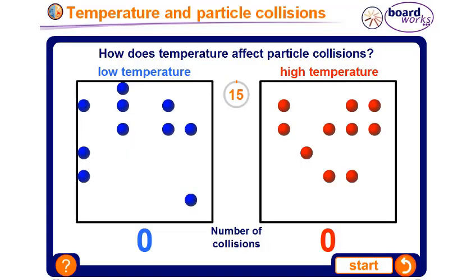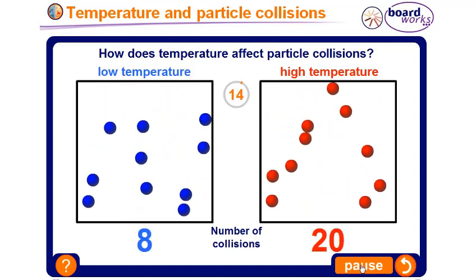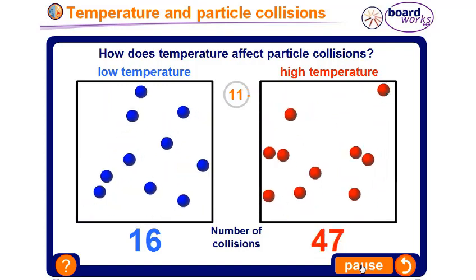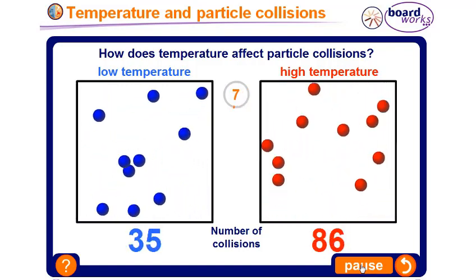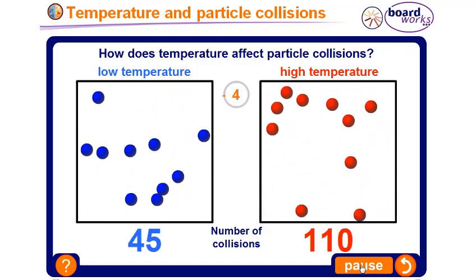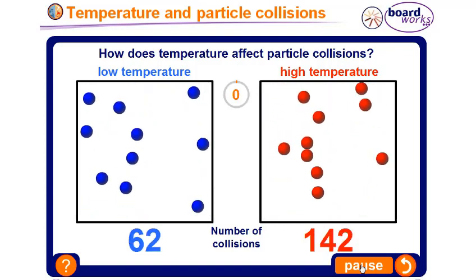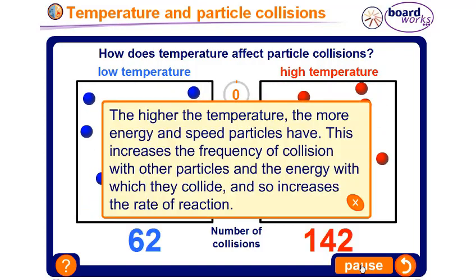Let's simulate two reactions — reaction one done at low temperature and reaction two at high temperature — and count the collisions. As a result of increasing the temperature, kinetic energy of the particles increases, which enhances collisions, which in turn enhances the rate of reaction. We conclude: the higher the temperature, the more energy each particle has, increasing the frequency of collisions and the energy with which they collide, increasing the rate of reaction.